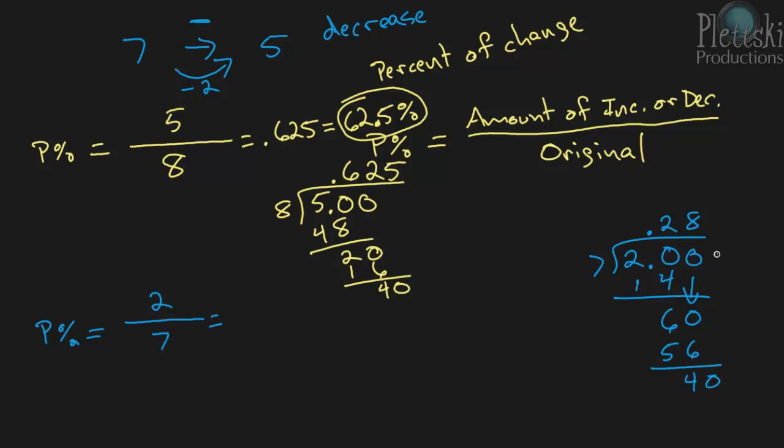So you bring down another 0. And 7 goes into 40 five times. 5 times 7 is 35. And it's going to keep going. 7 times 7 is 49. And we'll stop there.